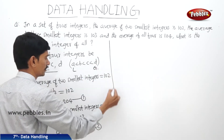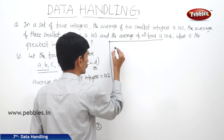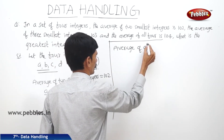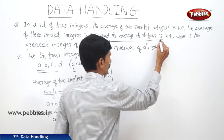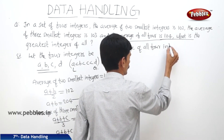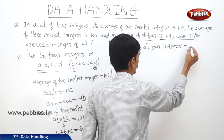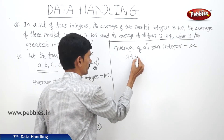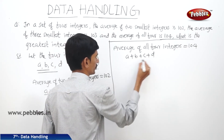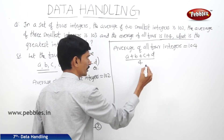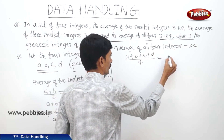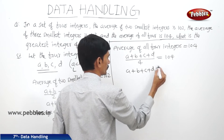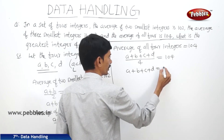And the average of all four integers equals 104. So A plus B plus C plus D divided by 4 equals 104. By cross multiplication, we get A plus B plus C plus D equals 416. This is equation 3.